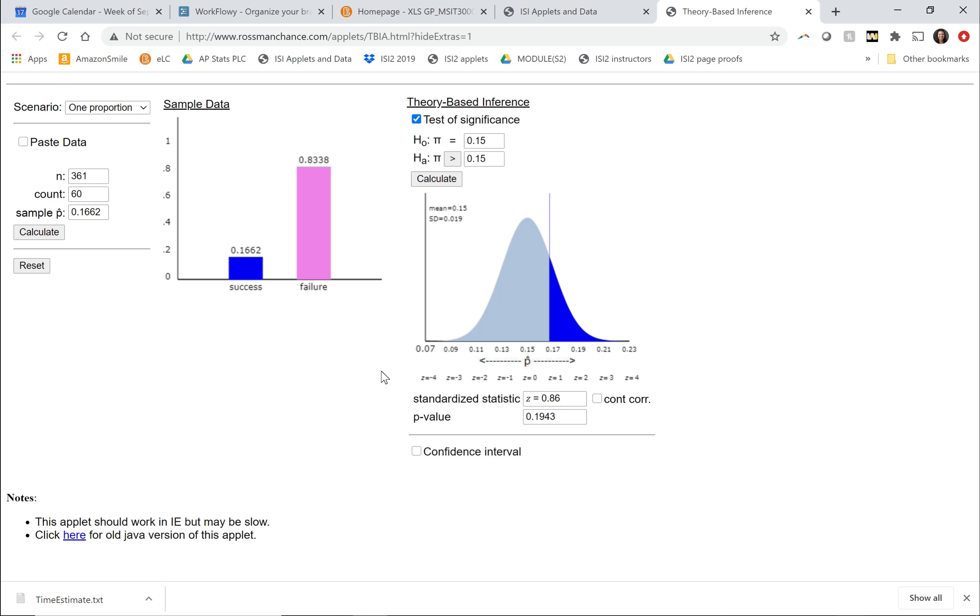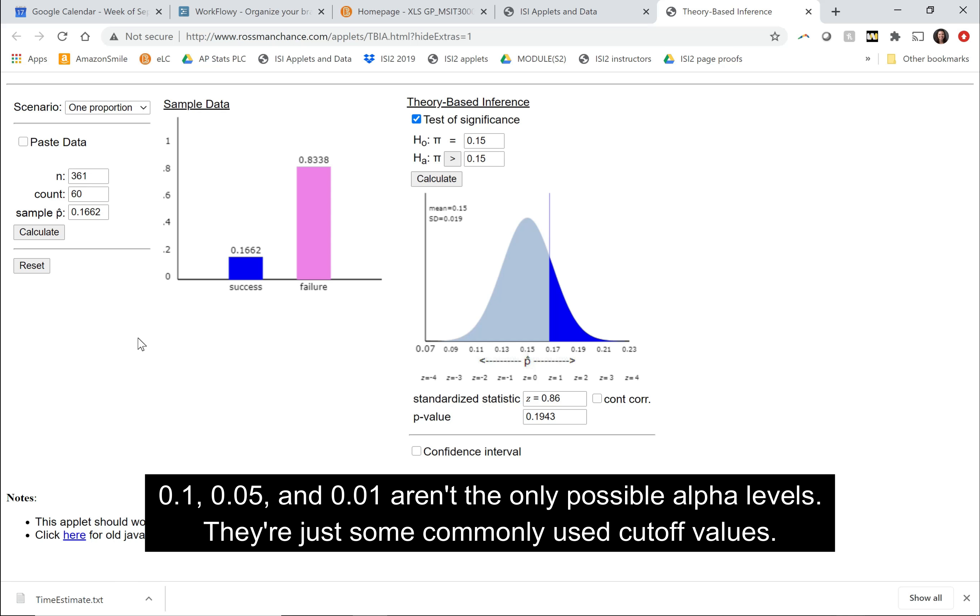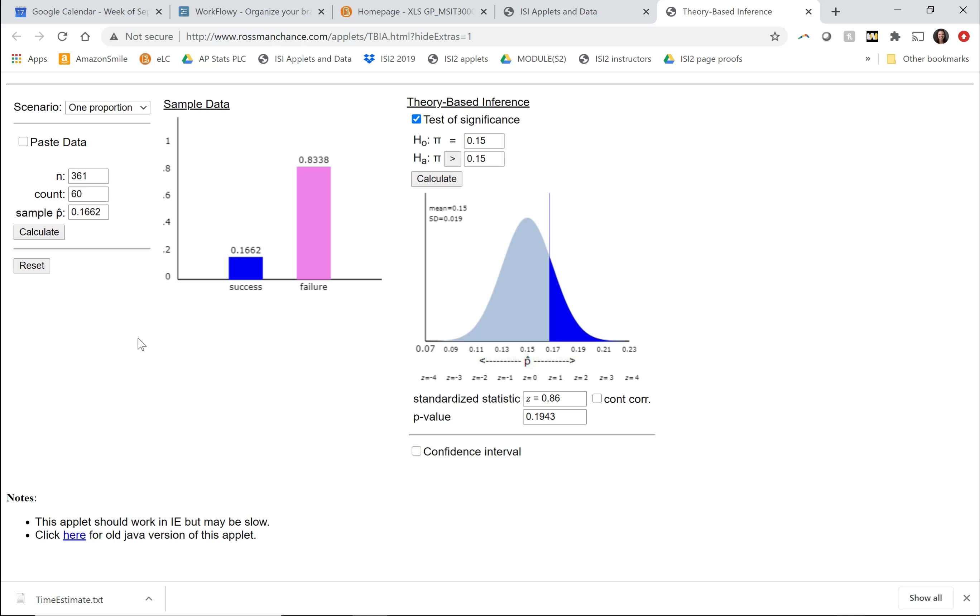So what I want you to do in the Google form is I want you to play around with these counts and figure out how big does the count need to be at each of the different significance levels, 0.1, 0.05, and 0.01. Then I'll ask you to make a general statement about the relationship between alpha and the strength of evidence.